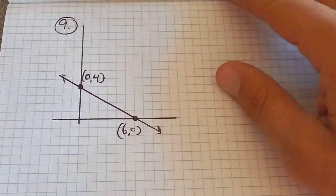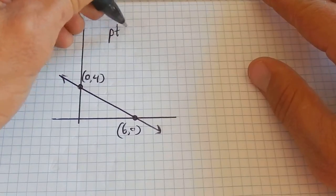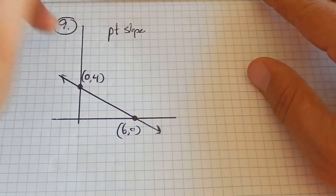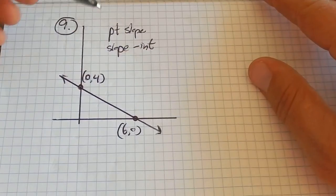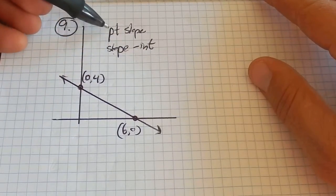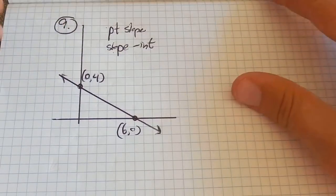You know, for me, there's a couple easy ways to write equations. One of them is point-slope form, and the other one is slope-intercept form. So if I have the slope and a point, or a point that happens to be an intercept, I can write those equations pretty easily.